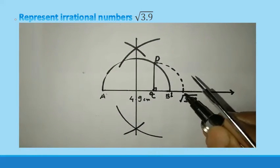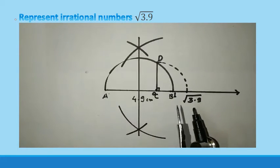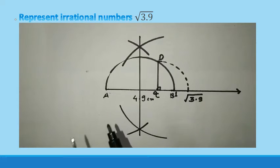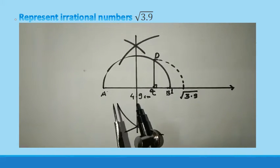So this is how to represent any irrational number. Initially if the number is root 3.9 you have to take the line segment plus 1 cm means 4.9.